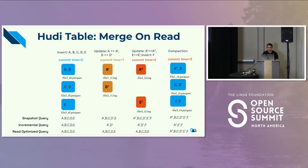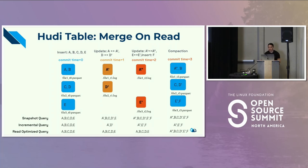This is why merge on read tables have low write amplification but slightly higher read amplification, because merging happens later through a compaction service. Looking at the blue boxes at commit time zero, we have our first initial load — everything gets written into a Parquet file with records A, B, C, D, E. If you're running a snapshot query, you get A, B, C, D, E back. If you're running an incremental query with no updates yet, you also get everything back. A read-optimized query looks at the Parquet file, so there's a little lag — it's what the table looks like when everything has been merged into a Parquet file.